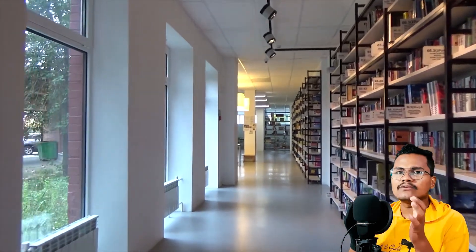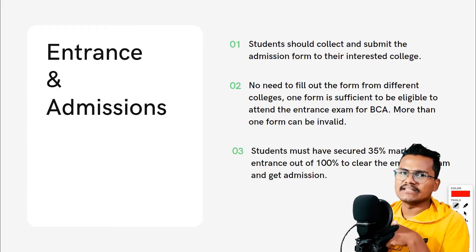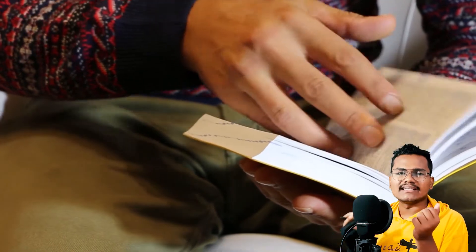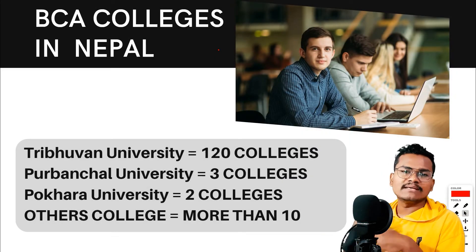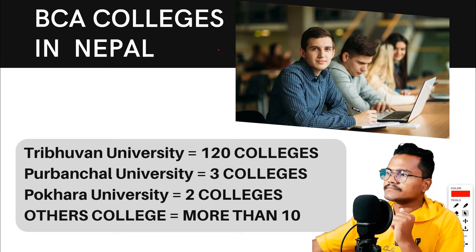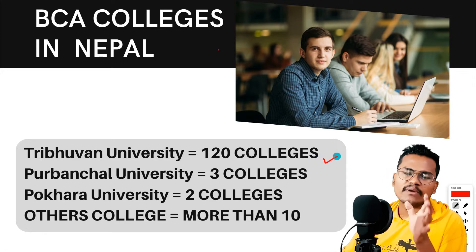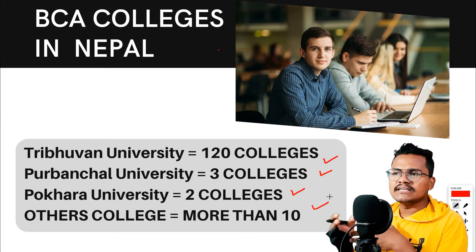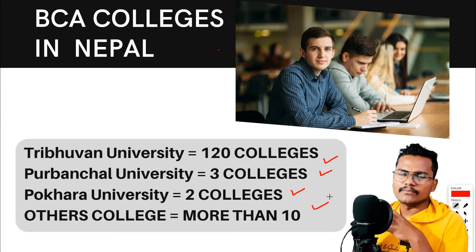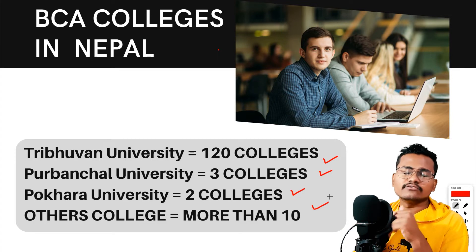After passing the entrance exam, you can choose from different government colleges, private colleges, or community colleges. Your marks also determine scholarship eligibility — depending on your score, you may be able to apply for scholarships. There are around 120 BCA colleges in Nepal — both government and private — affiliated with various provincial and central universities.